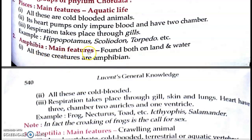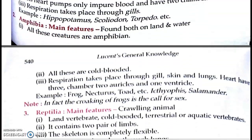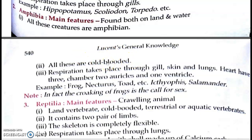Now come to Amphibia. Amphibia — Hindi mein kehte hain 'ubhaychar' — jo paani mein bhi rehte hain aur zameen par bhi. All these are cold-blooded, same as Pisces. Respiration takes place through the gills, skin, and lungs — dhire-dhire movement ho rahi hai water se land ki taraf, toh respiration gills se bhi hota hai, skin se bhi, aur lungs bhi aa gaye. Heart has three chambers — two auricles and one ventricle. Examples: frog, nocturus, toad, salamander, etc.